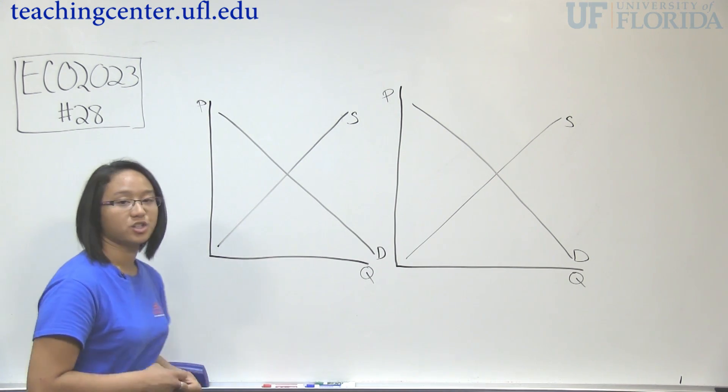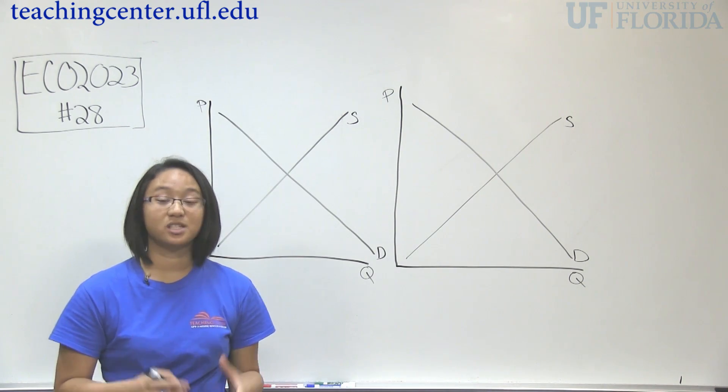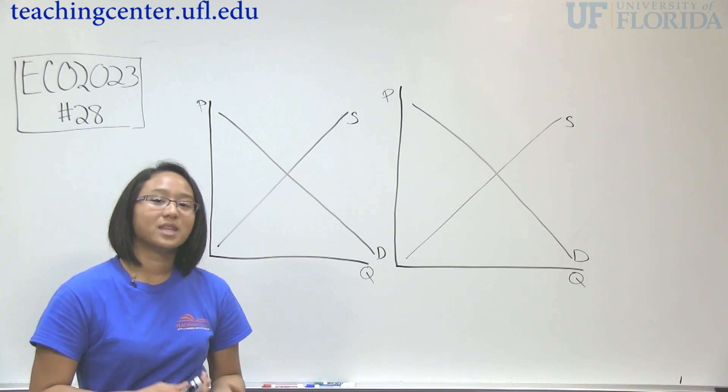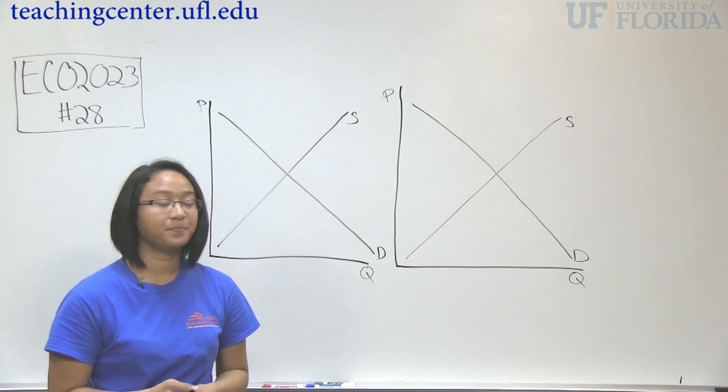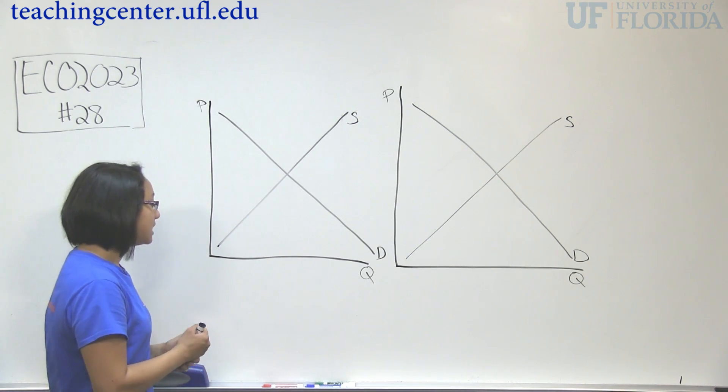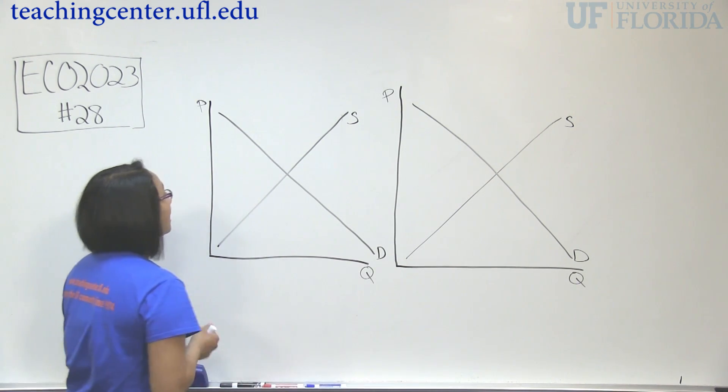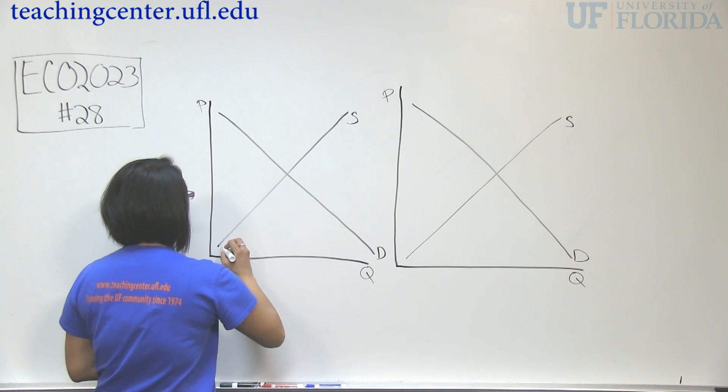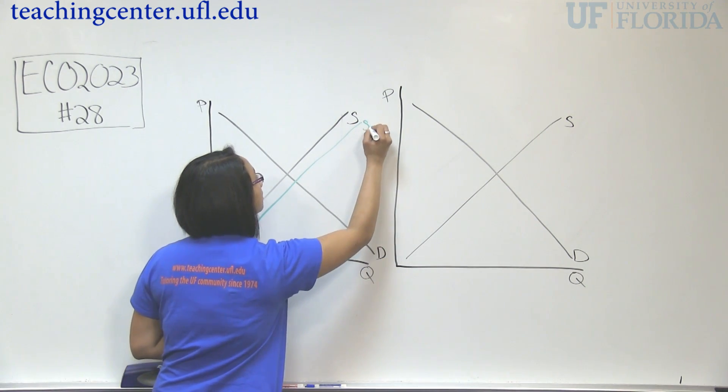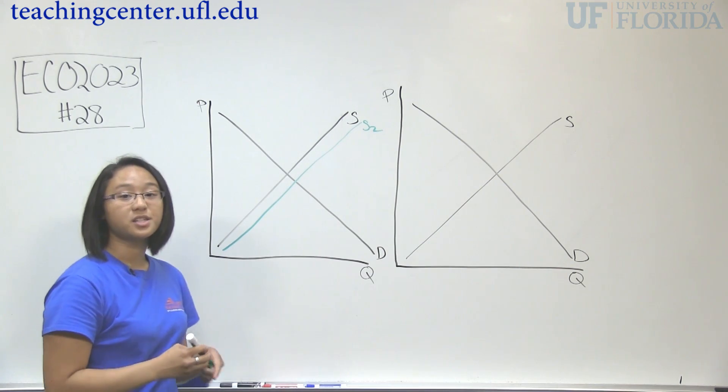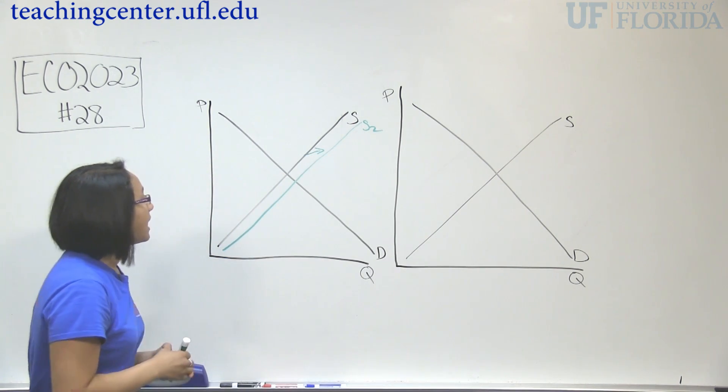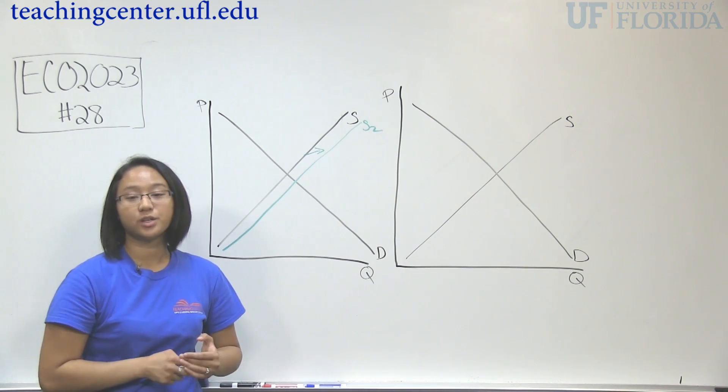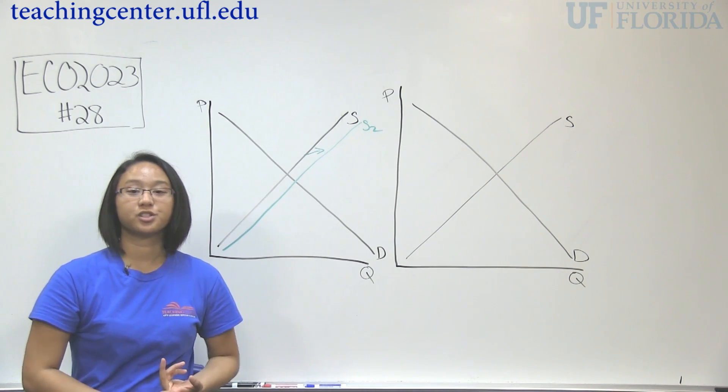So the first part of the question says that new technology is invented for suppliers. When that happens, it's become easier for suppliers to produce the good. So because it's become easier for suppliers, supply increases. So here I'm going to draw supply. When it increases, it shifts to the right.